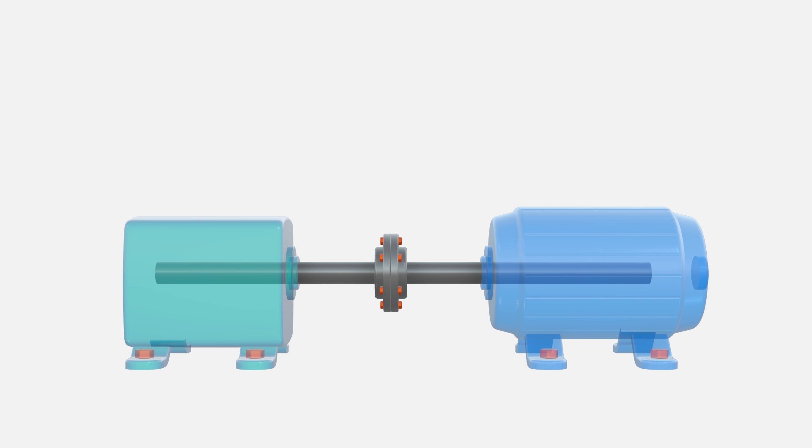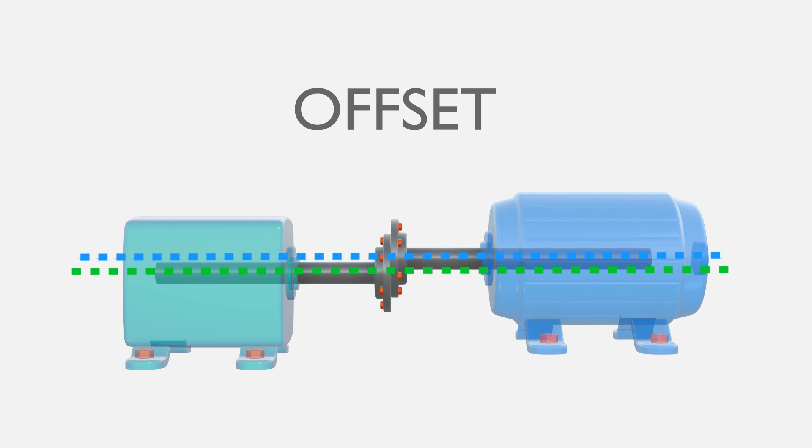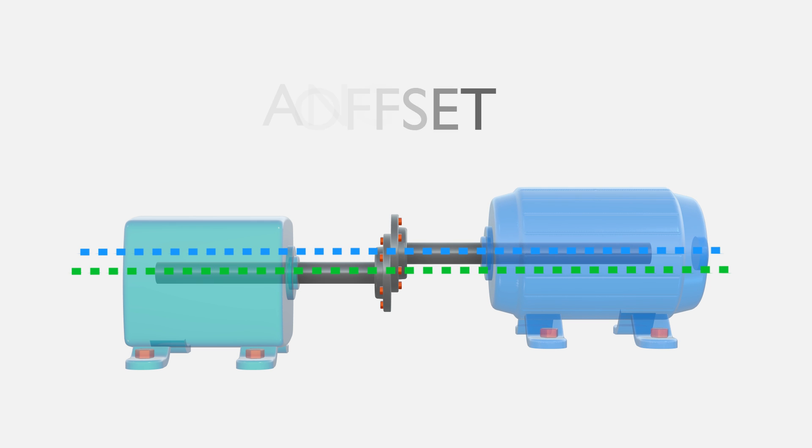Shafts are usually out of alignment, with the misalignment taking two forms – offset misalignment and angular misalignment.